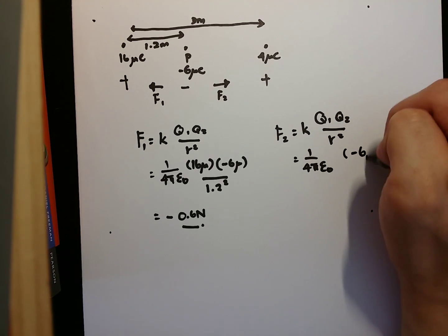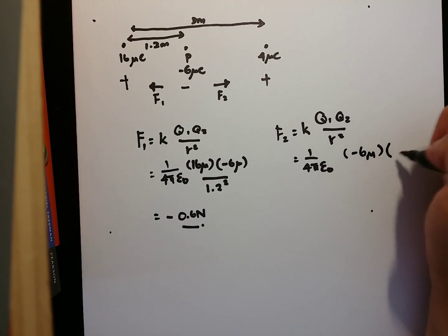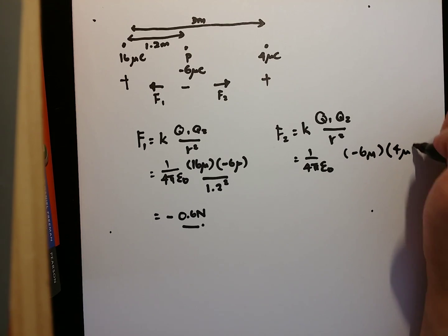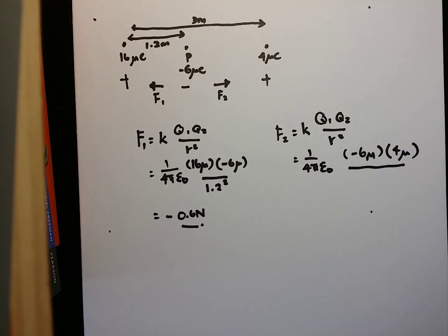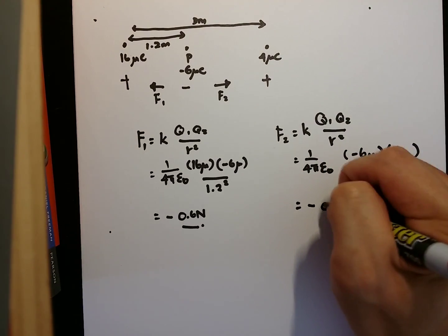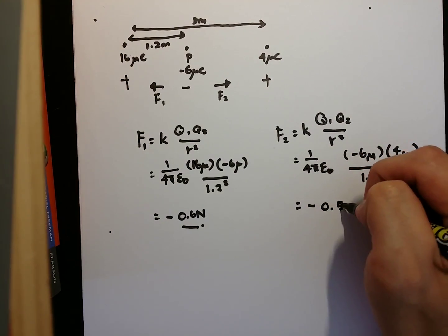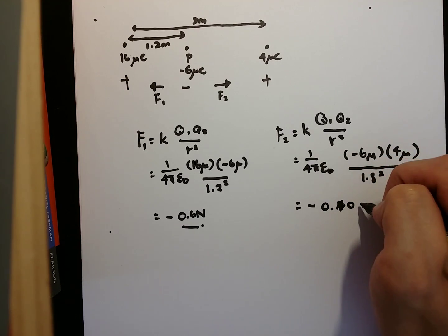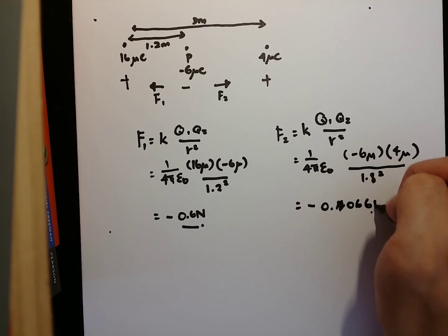Next, that will be 6 micro minus 4 micro, divided by 1.8 squared, which gives me negative 0.066 newton.